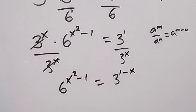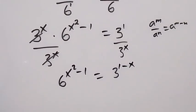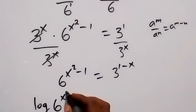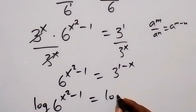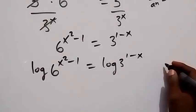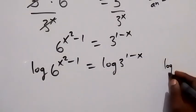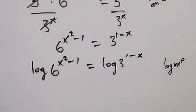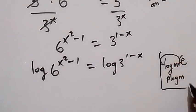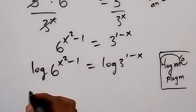In the next step, let's take the log on both sides. We have log of 6 raised to power x squared minus 1 equals log of 3 raised to power 1 minus x. We apply the power rule of logarithms, where log of m raised to power p equals p times log m, bringing the power to the front.